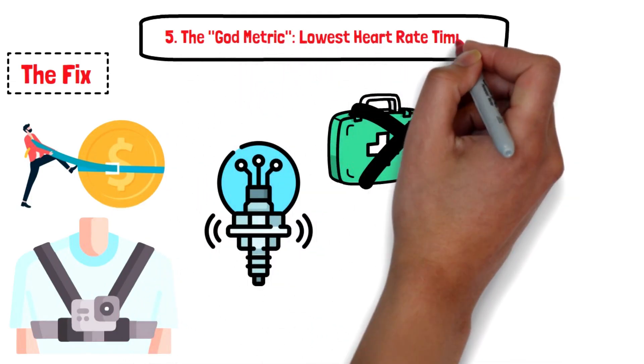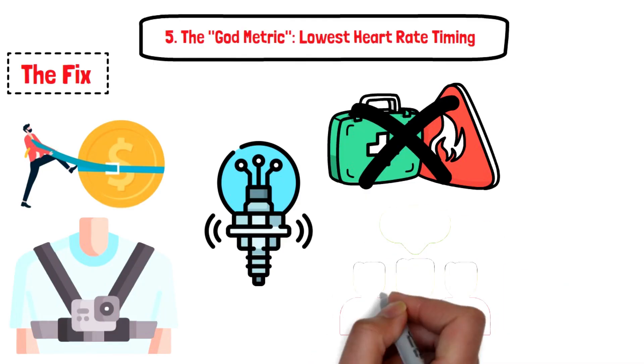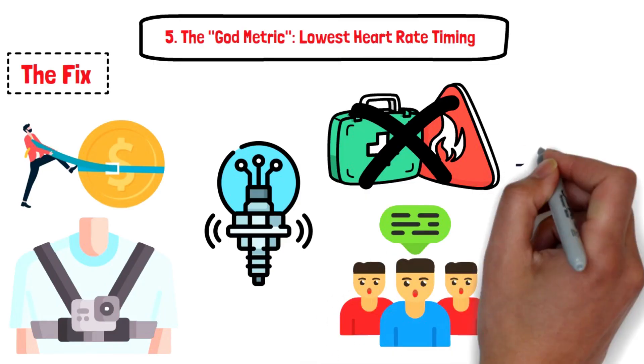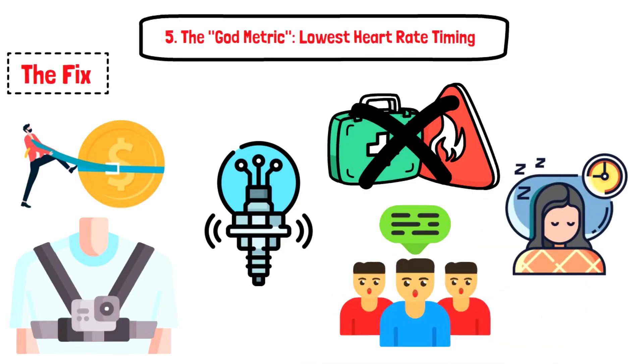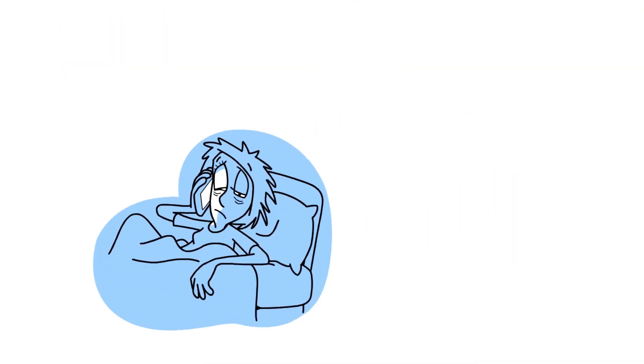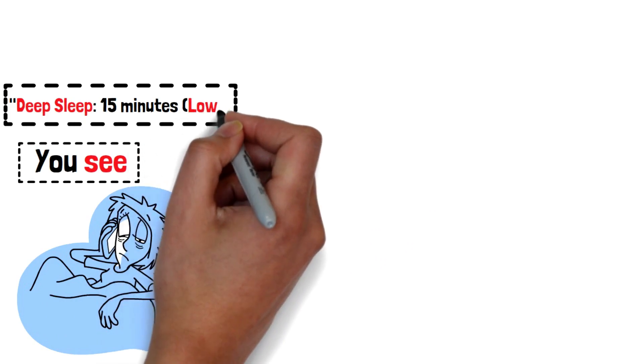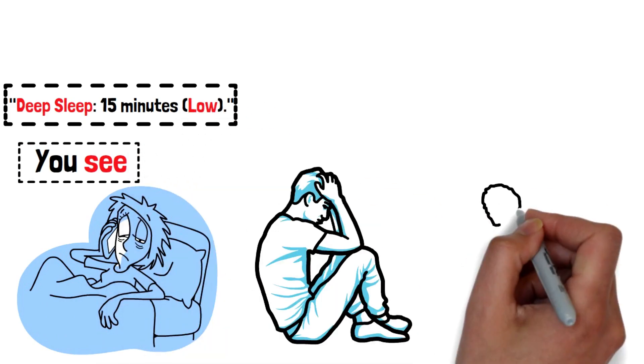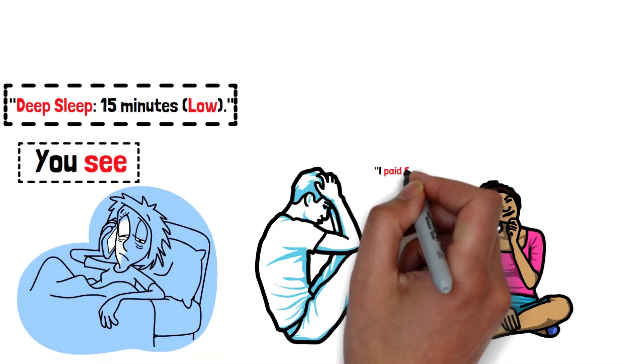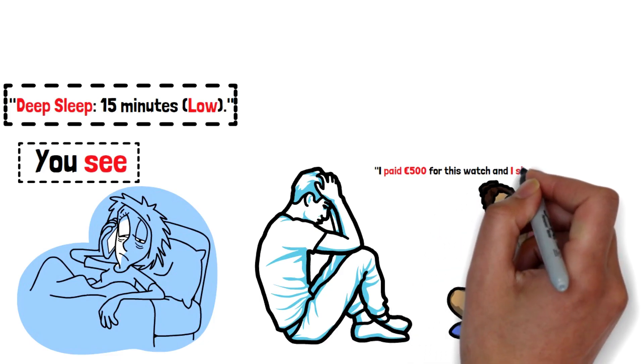Five, the god metric: lowest heart rate timing. Now let's talk about the number that frustrates everyone—sleep score. You wake up, you see deep sleep: 15 minutes, low. You feel disappointed. You think, 'I paid 500 euros for this watch and I sleep like trash.'